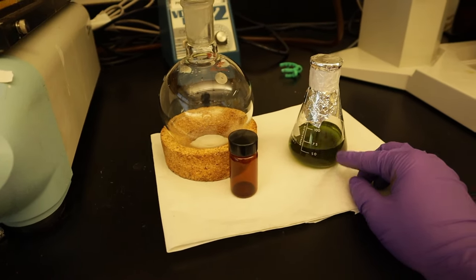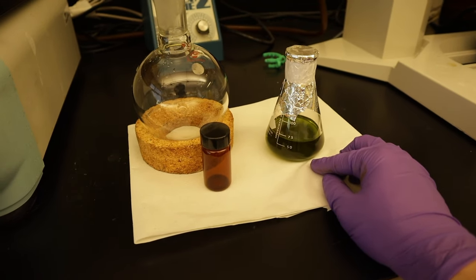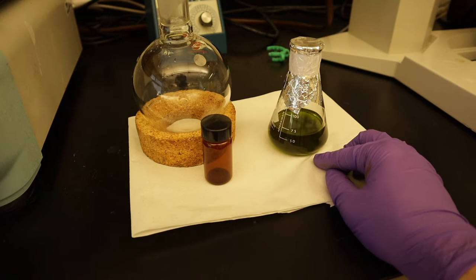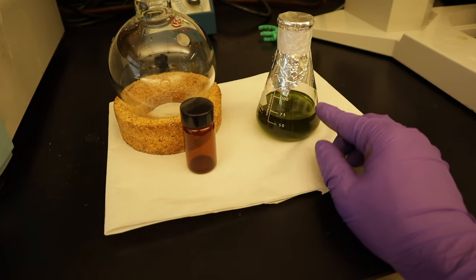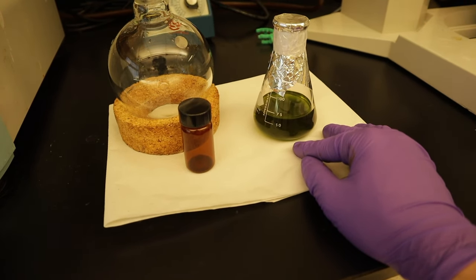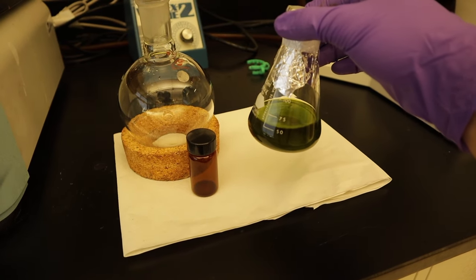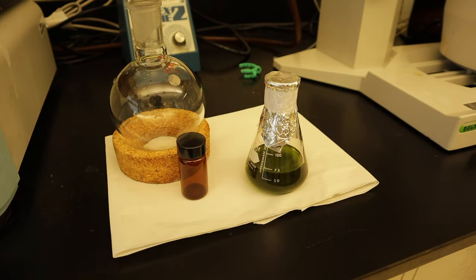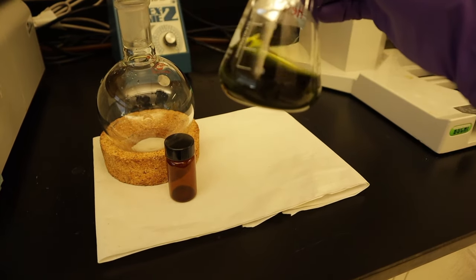We put the plant material, which is the leaves of Corchorus olitorius. In Filipino, it is called Saluyot. We soak the Saluyot leaves in a solvent for three days. Then, after three days, we filtered it to remove the plant material or the leaves, leaving us this solution.